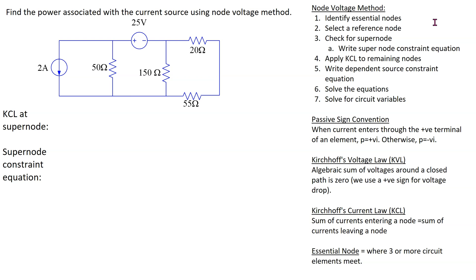The first step is to identify essential nodes. An essential node is where three or more circuit elements meet. This given circuit has one, two, and three essential nodes. We need to select a reference node, so let's make this bottom node the reference node.